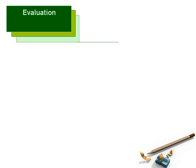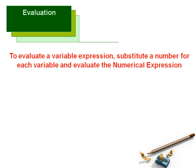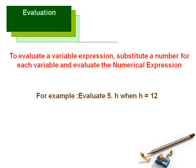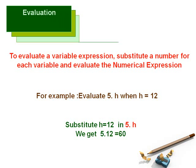Now we shall discuss a very important section for solving problems, called evaluation. For evaluating a variable expression, we need to substitute the value of each variable and then calculate the final value of the numerical expression. Let's take an example: we need to evaluate 5 times h, where h is equal to 12. So we substitute the value of h, which is 12, into the variable expression. We get 5 times 12, which is equal to 60. This is the answer to the variable expression.